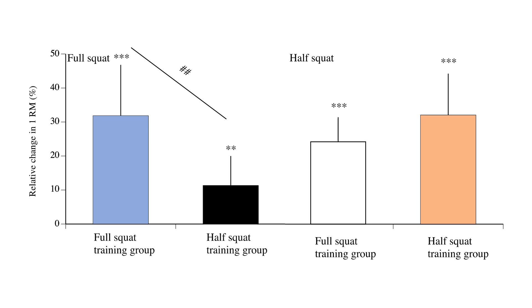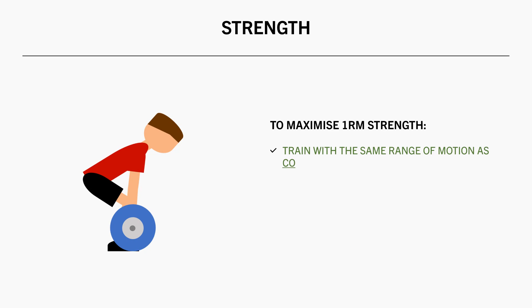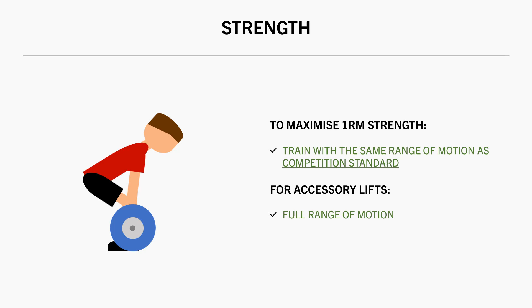So essentially, if the goal is to maximize 1RM of a specific lift, you would want to perform that lift with the same range of motion as the competition standard, or whatever standard you are using to test your strength. Although it should be noted that this is only for the specific competition lifts. You may also include accessory lifts with the intent to hypertrophy the prime movers of those lifts. For these accessory exercises, you would probably want to use a full range of motion or lengthened partials in the same way that you would train to maximize muscle growth.